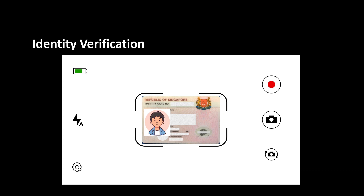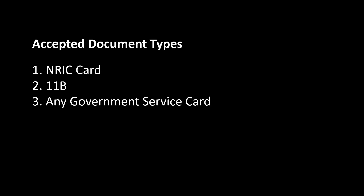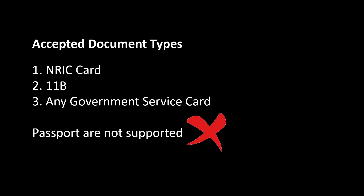Identity Verification. Take a picture of a valid identity document. Follow the instructions on the screen and snap a photo of your identity card. You will be required to take a picture of both the front and back of your IC. Please ensure that you are completing this step in a place with good lighting so that all details are visible and clear. Accepted document types: 1. NRIC Card, 2. 11-B, 3. Any Government Service Card. Take note that passports are not supported.